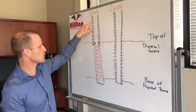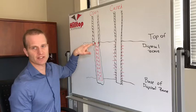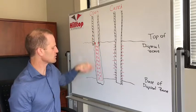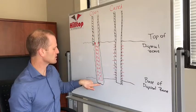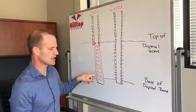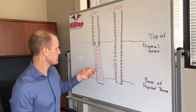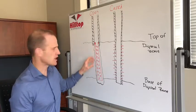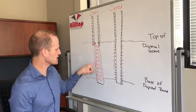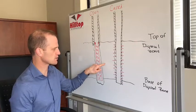In an open hole completion you drill down and run casing to the top of your disposal zone. You drill out to the bottom of your disposal zone and then run a liner. A liner is a piece of pipe with holes or slots cut in it so that the water can be injected into the disposal zone.